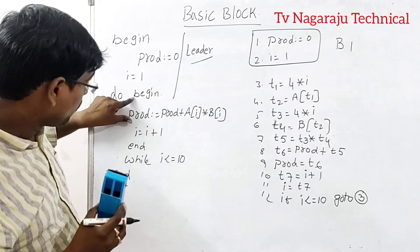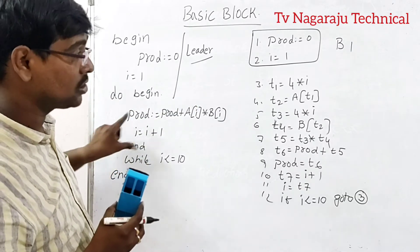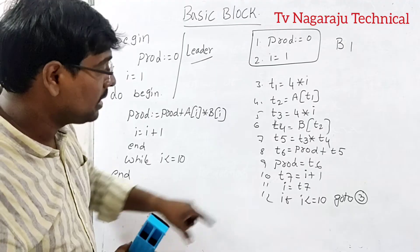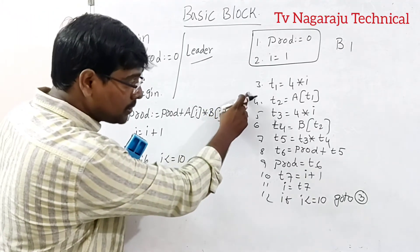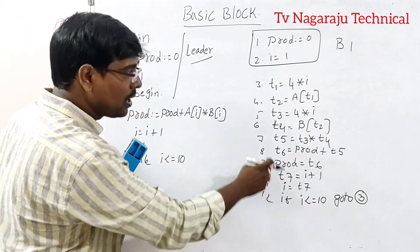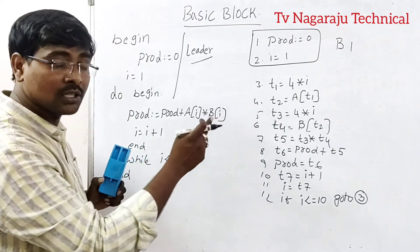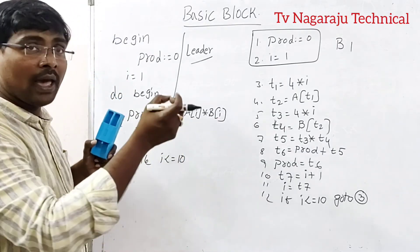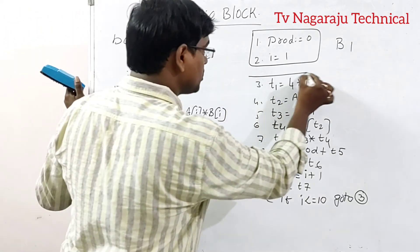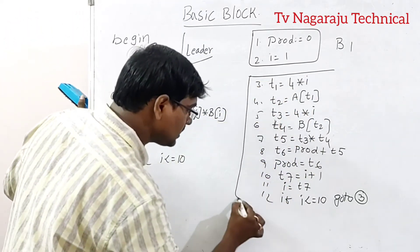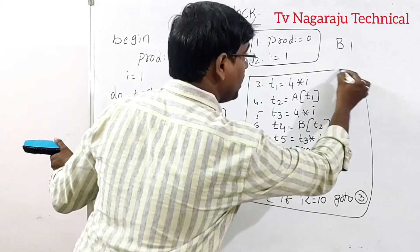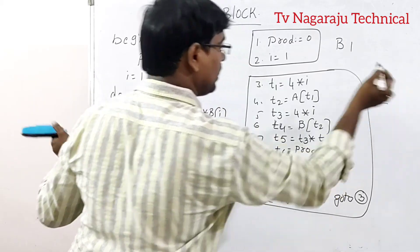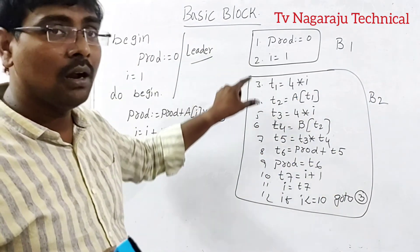Now here we are beginning another operation. So this is called another block. To observe in all the operations, we are using the regular things. There is no go-to statement and there is no another beginning point. So this is considered as another block B2. Clear the point. These are called blocks.